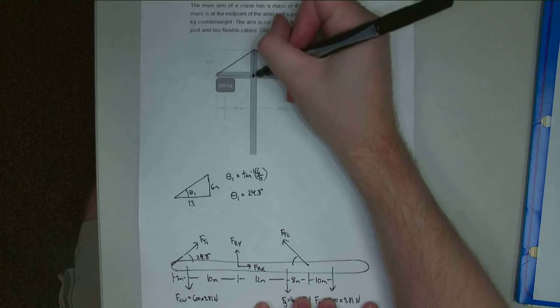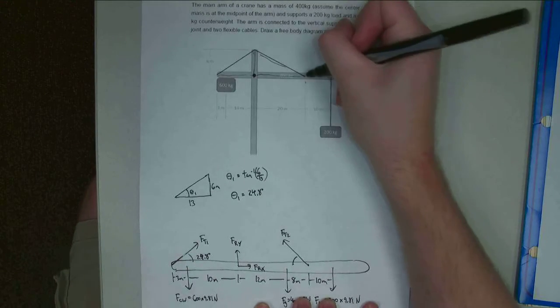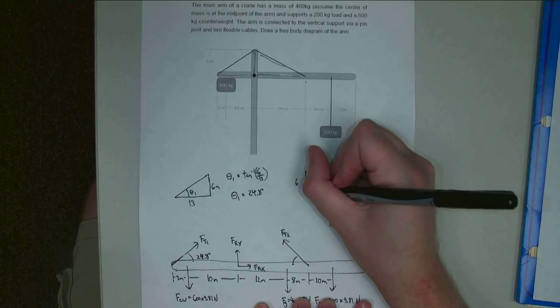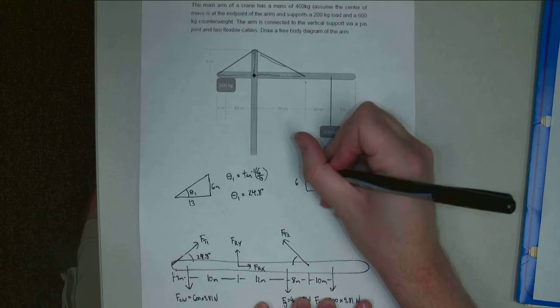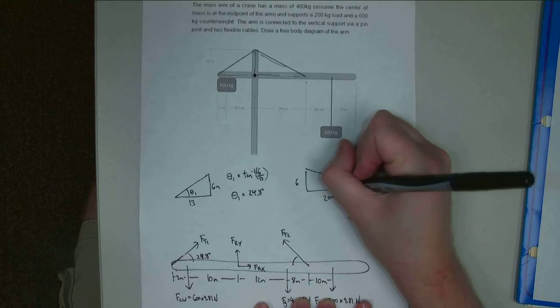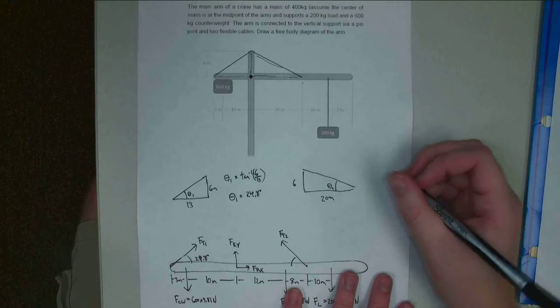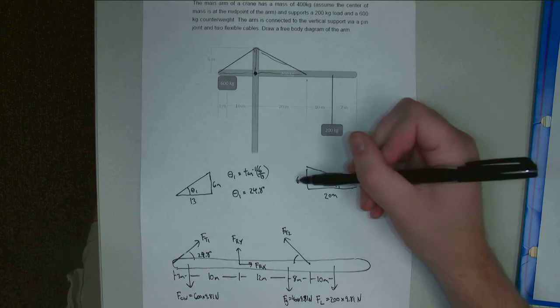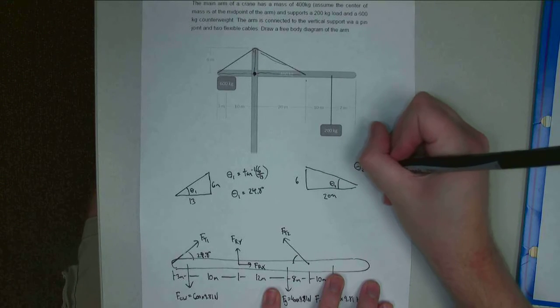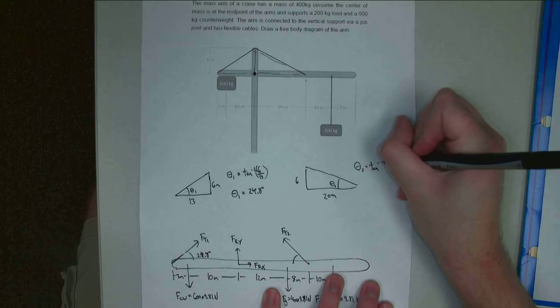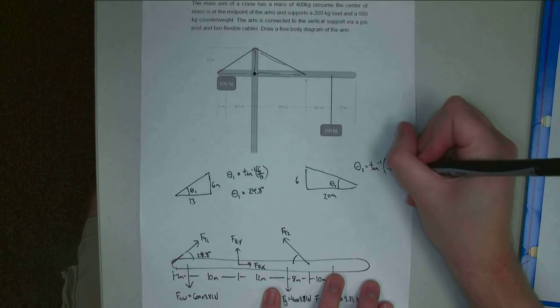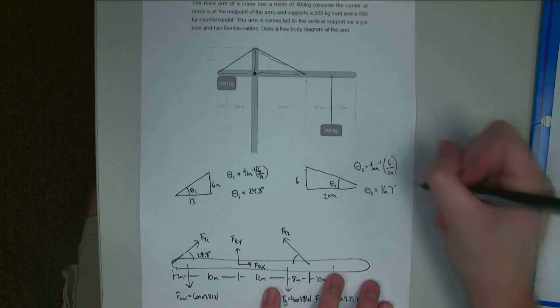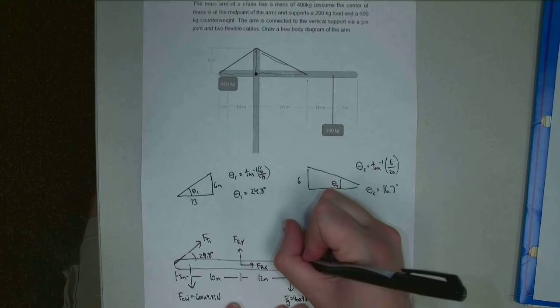And I can do the same thing for this triangle right here for this tension in the cable. Alright, so for that one, it's still 6 meters tall. But now it's 20 meters long. And if I want to know this angle theta 2, I do the same strategy. So the tangent of this angle is going to be 6 over 20. So I do theta 2 equals tan inverse of 6 over 20. And theta 2 ends up being equal to 16.7 degrees. Alright, so this angle over here is 16.7 degrees.